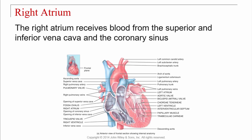We have these little strings coming off of the valve — when they talk about 'tugging at your heartstrings,' well, here are the heartstrings. These are called the chordae tendinae, and they attach to structures called papillary muscles.